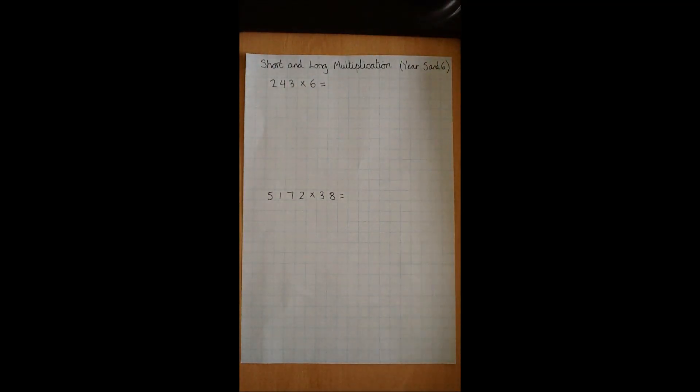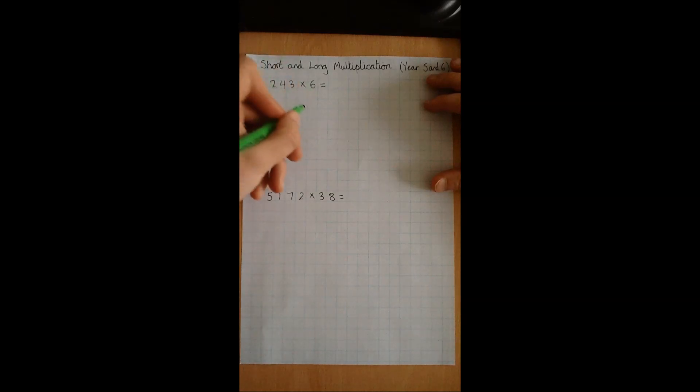By year 5 and 6, the two written methods for multiplication are known as short and long multiplication. With short multiplication, we are multiplying a 3-digit number by a single-digit number. In this case, 243 multiplied by 6. So we would lay it out in our columns.